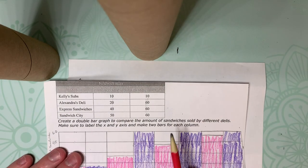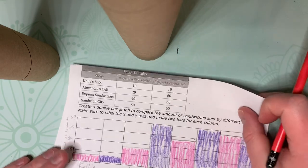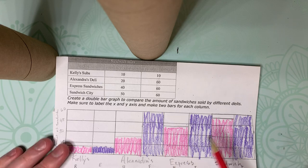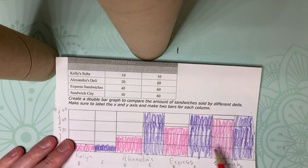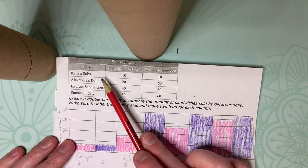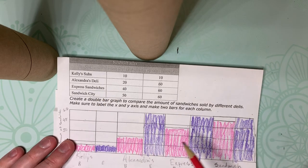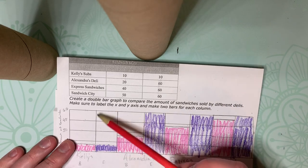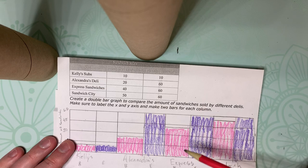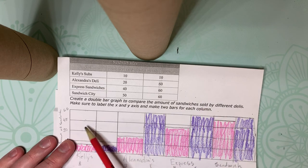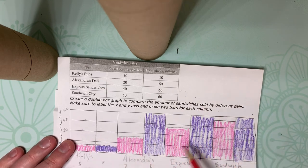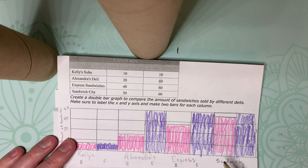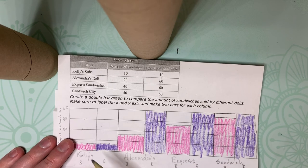I took the liberty to go ahead and complete some of this because it was a lot of legwork up front. And just to kind of show you some of the characteristics of a double bar graph, I had to create an extra section for this because we had four of our deli shops here, but we only have three sections. So I created a fourth, and then I took each section and split it in half. So that gives us a total of eight total sections. But two of them are going to belong to Kelly's, two of them to Alexandra's, two of them to Express, and then two of them to Sandwich City.